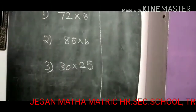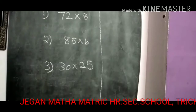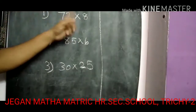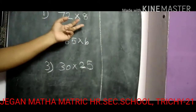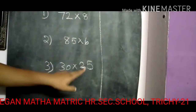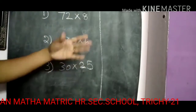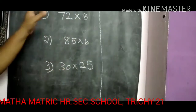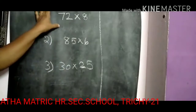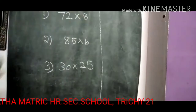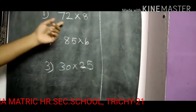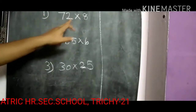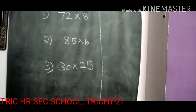Ok, now let's see the first class. I am starting from the single digit number — first single digit number, then 2 digit number, finally 3 digit number, multiple with the 3 digit number. First, 2 digit number multiple with the single digit number: 72 multiple with 8.